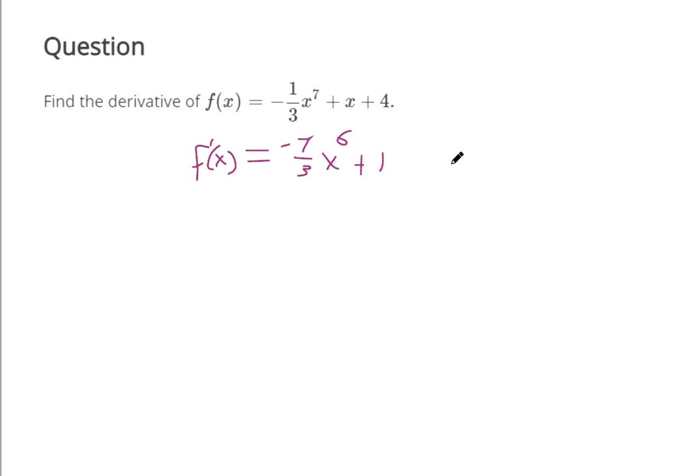You could put the x to the 0 if it makes you happy. And then the derivative of a constant is nothing. It doesn't change with respect to x. So that's your derivative. No more limit definition of a derivative.